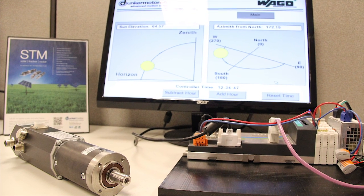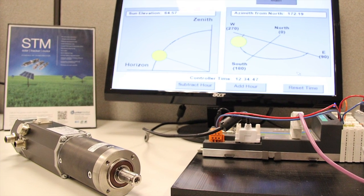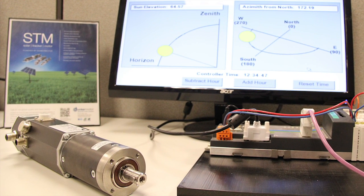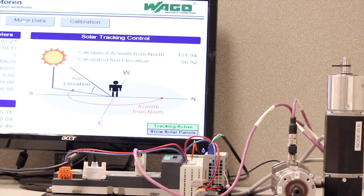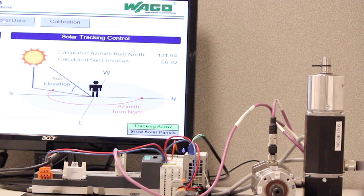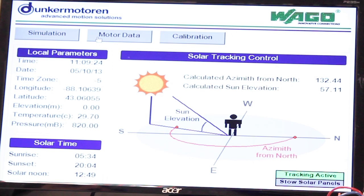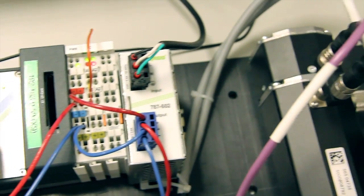Realizing a solar tracker system can be very simple by connecting our integrated STM motors with a PLC, IPC, or custom-made controller. However, today we'll be demonstrating with a WAGO IPC with a solar tracking block and two of our BG65 CI motors with STM features working as azimuth and elevation drives.